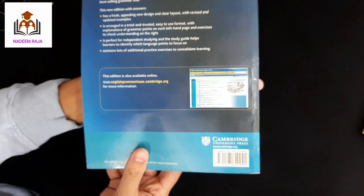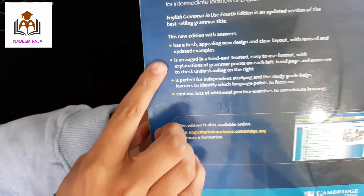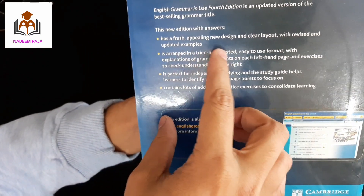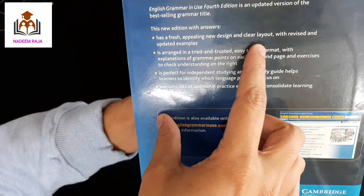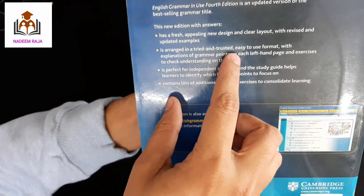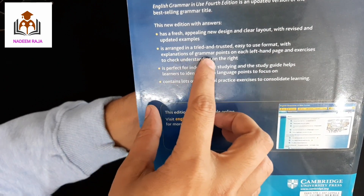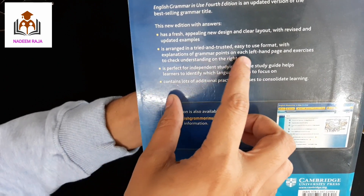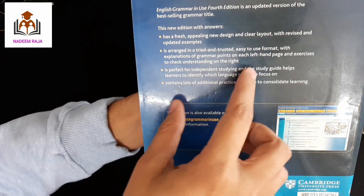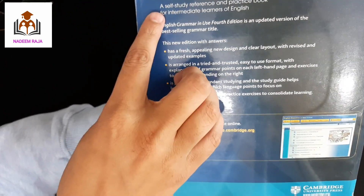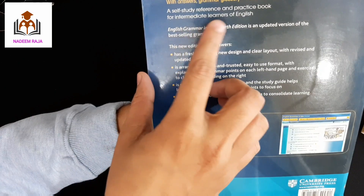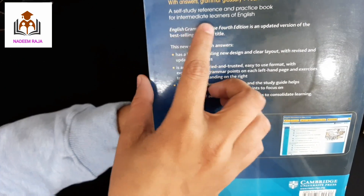You can see what has been added in this new edition: a fresh, appealing new design with clear layouts, revised and updated examples, arranged in an easy-to-use format. Grammar explanations are on the left-hand page and exercises to check understanding are on the right-hand page. It remains a self-study reference and practice book for intermediate learners.